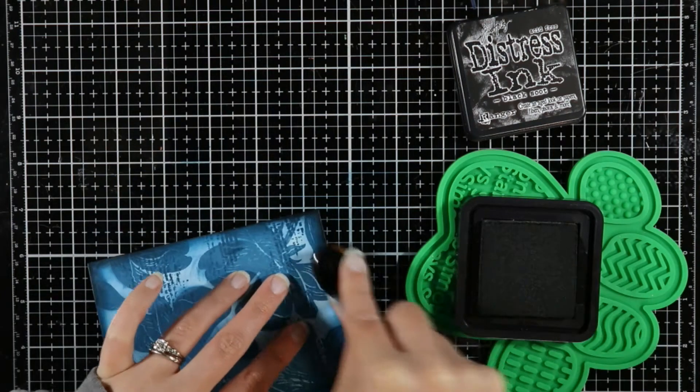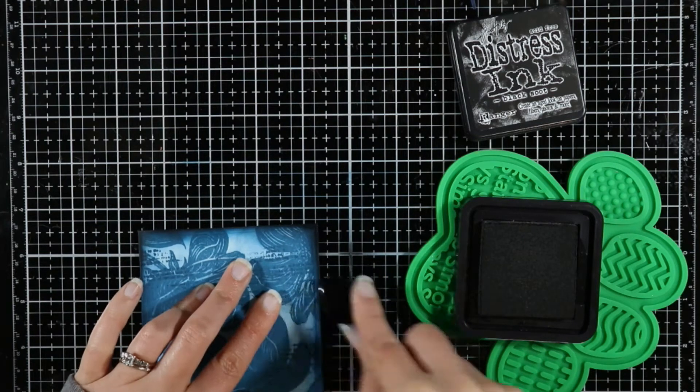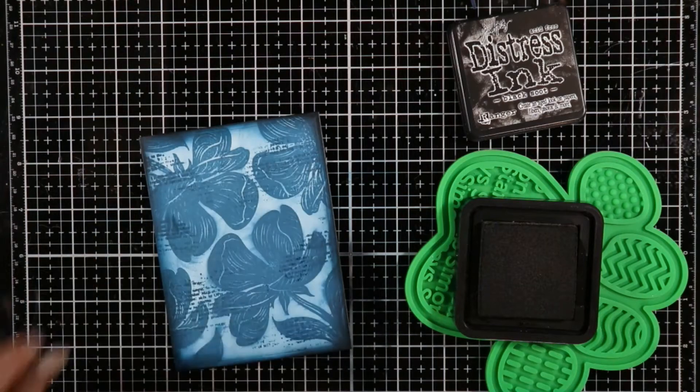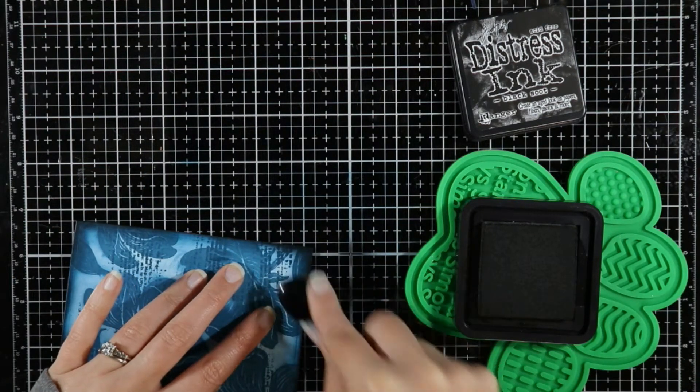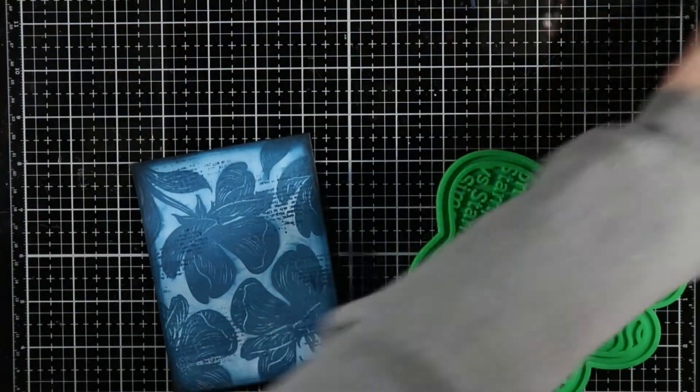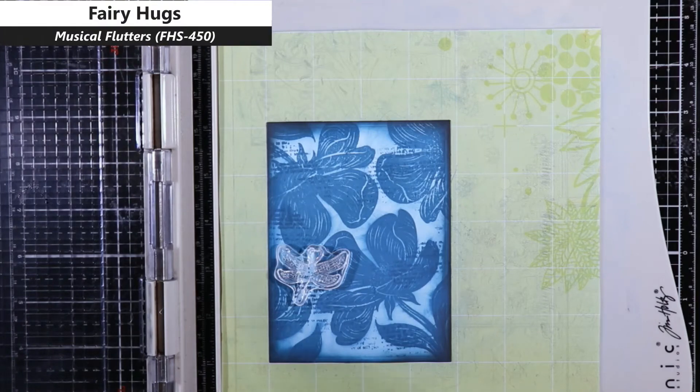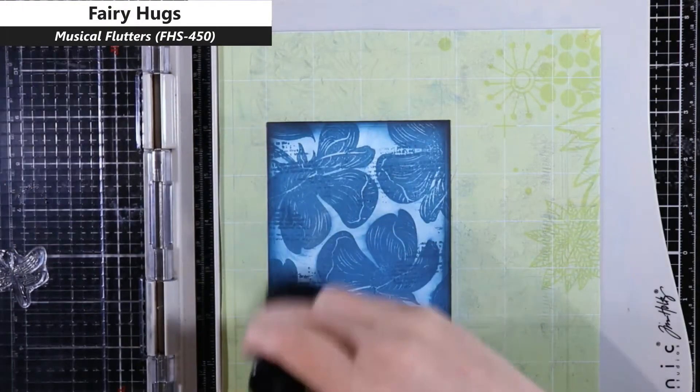I am going around with Black Soot here just because I wanted it to be just a little darker, especially around the corners. That is the only color that I used on this card that was not the Uncharted Mariner. I dried this off screen with my heat tool. You can let it dry naturally if that's your thing. I'm not patient, so that's not going to happen.